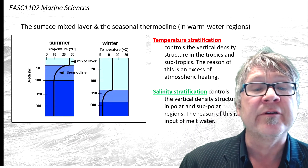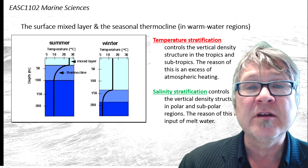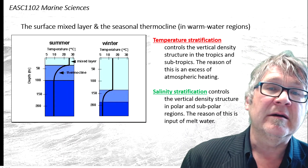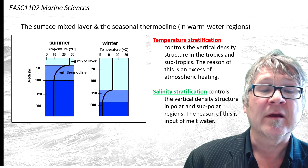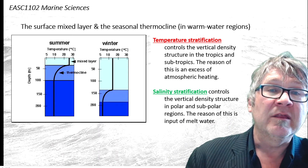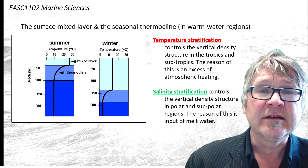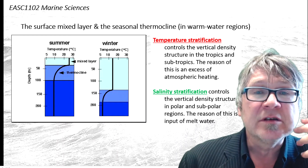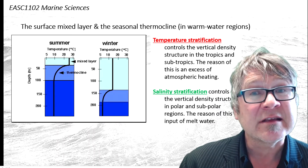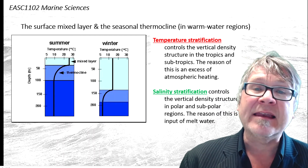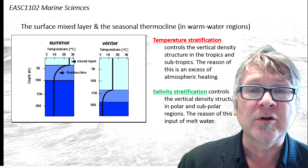In polar regions, it's totally different. It is the salinity structure that determines the density structure. The low salinity at the surface controls the density, which actually allows the surface water to be much colder than the waters underneath. It's the salinity effect that enables the existence of cold water near the surface and the existence of sea ice in polar regions.